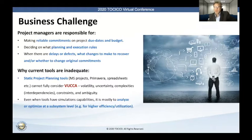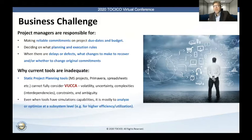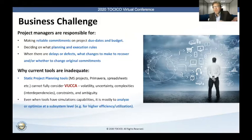And yet we have to make reliable commitments. Even in cases where we are able to do some simulation modeling, typically what happens is the simulation is done on just a part of the system — a subsystem level — and often done to achieve just higher efficiencies or higher resource utilization. So when you have the wrong objective function, your optimum solution might be very much suboptimal. That's why the current tools given to project managers don't really equip them well for those three objectives: making reliable commitments, deciding the best rules to use, and knowing what recovery actions to take.